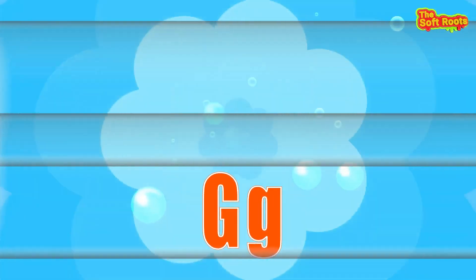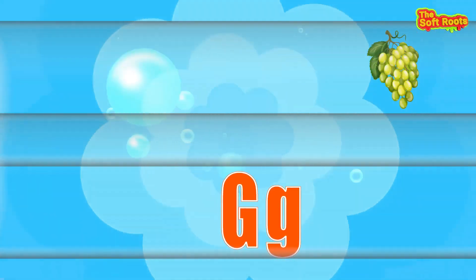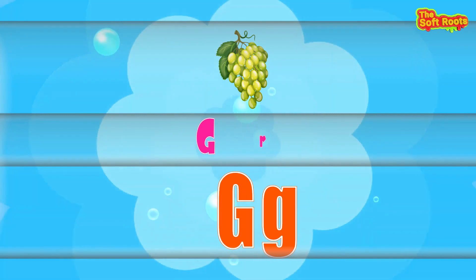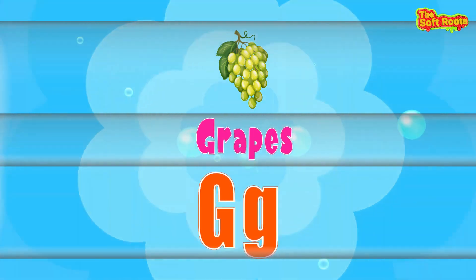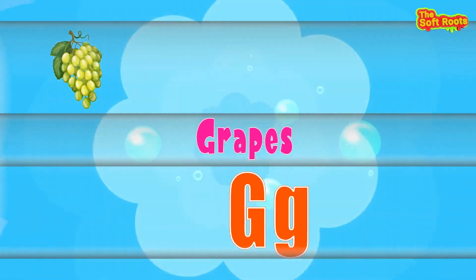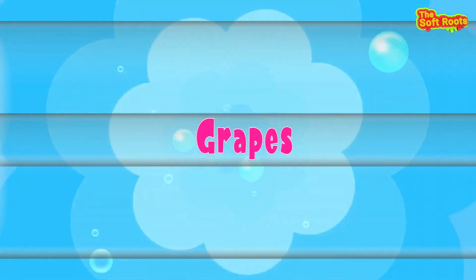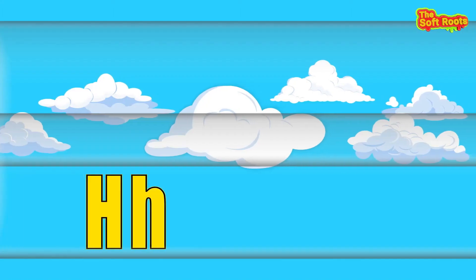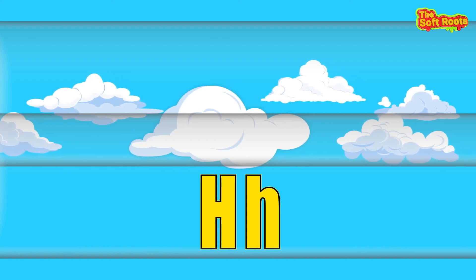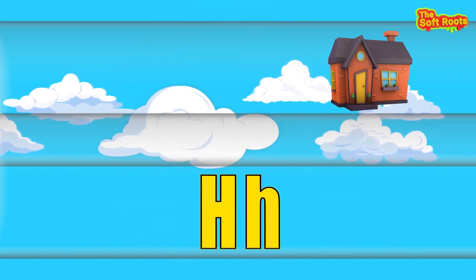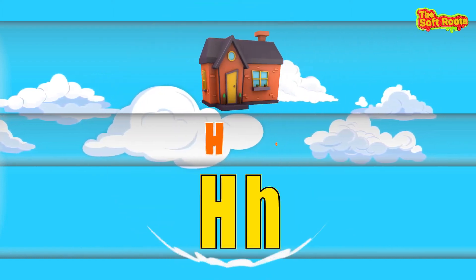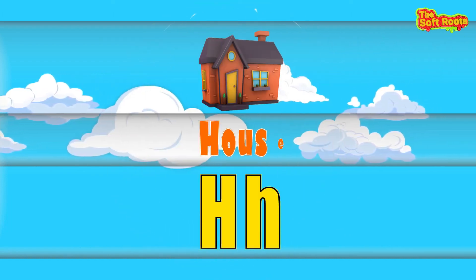G is for G-G-Grapes, G-G-Grapes. H is for H-H-House, H-H-House.